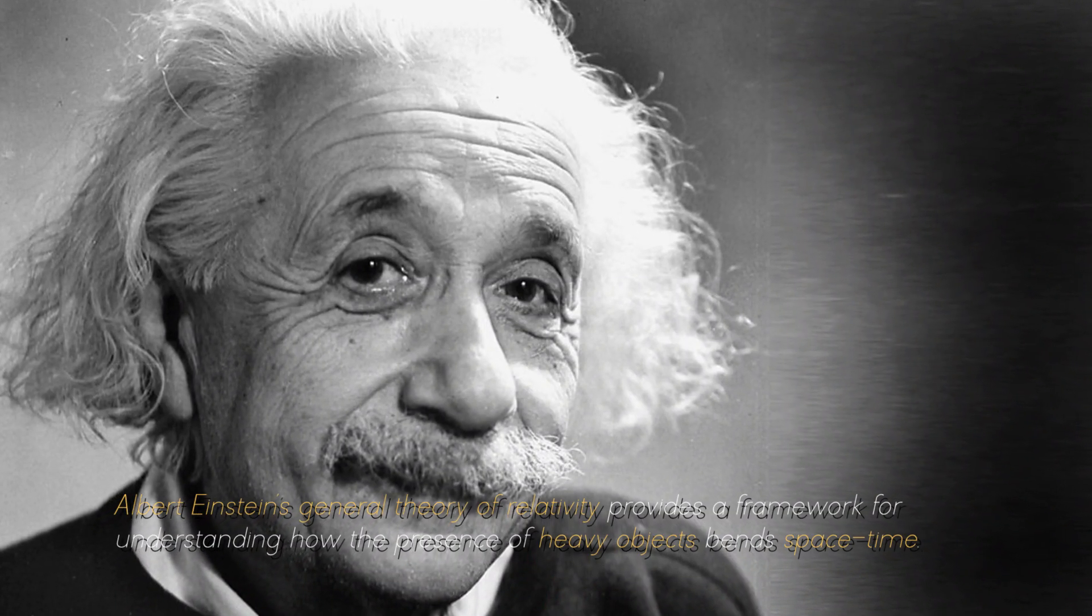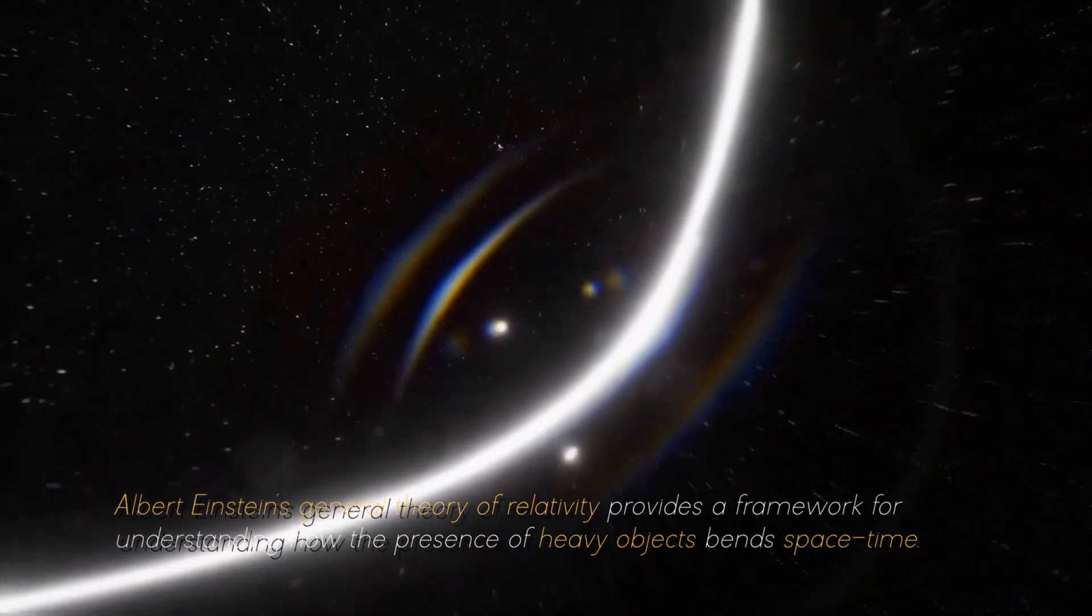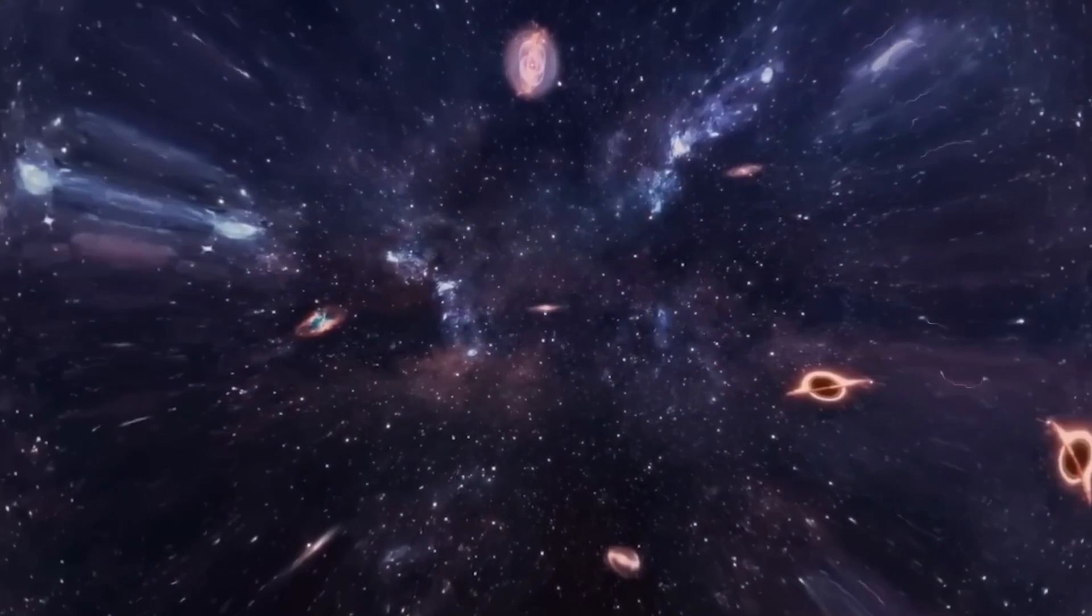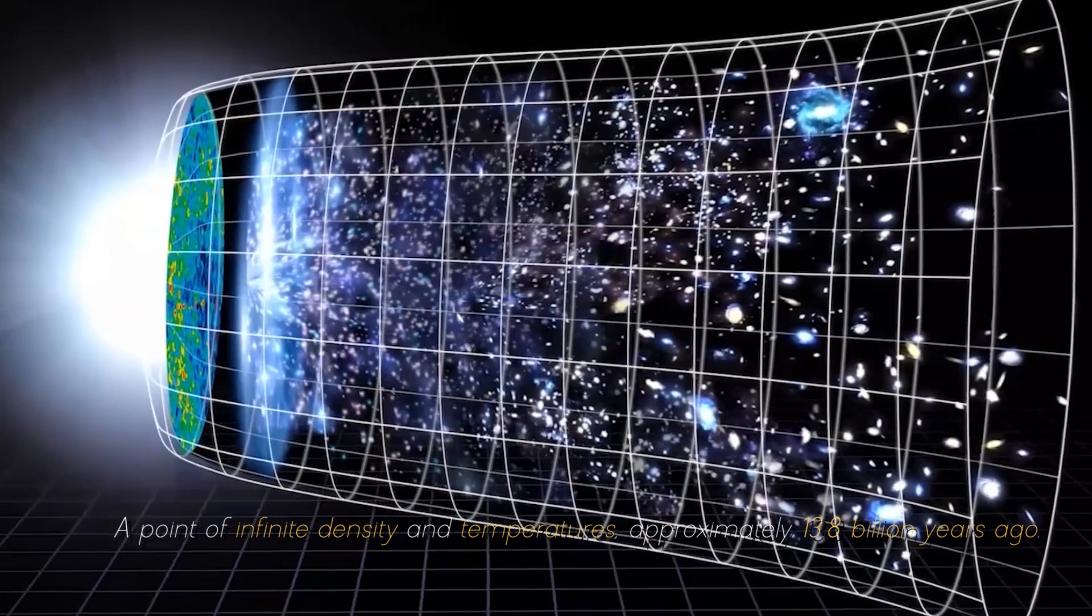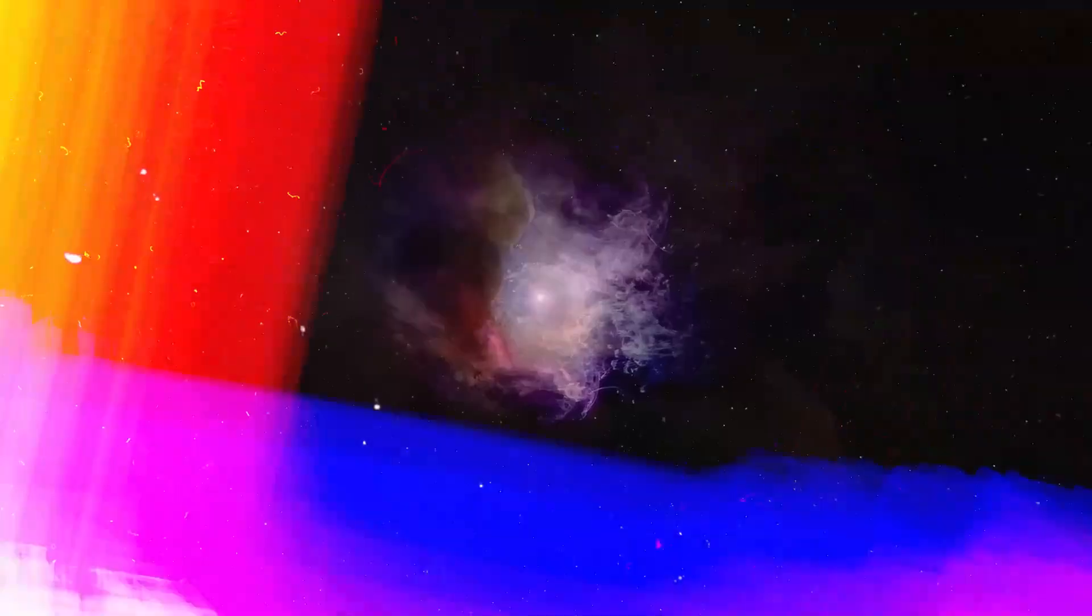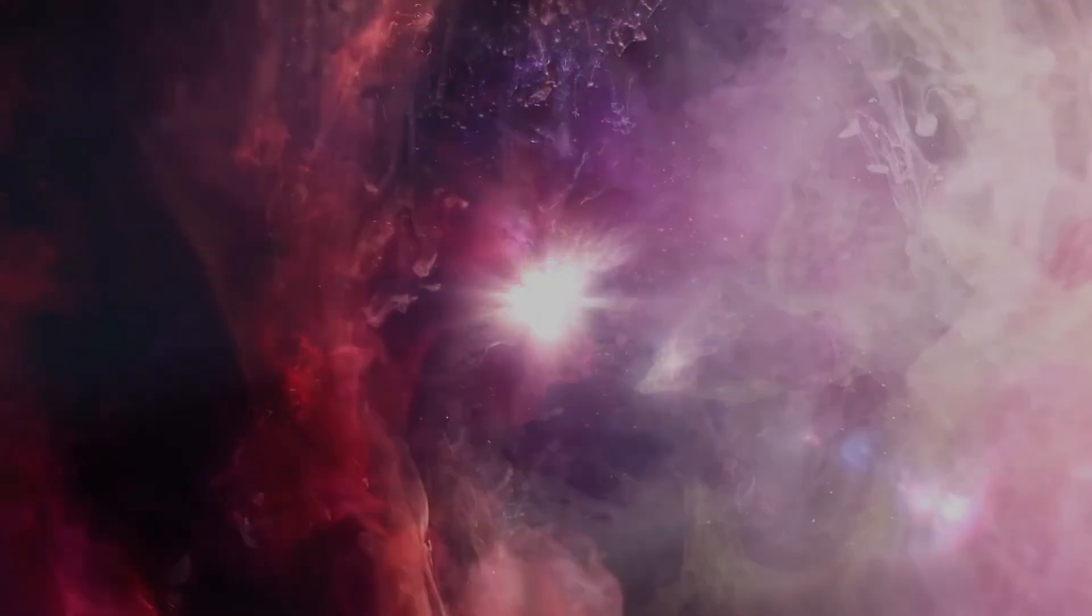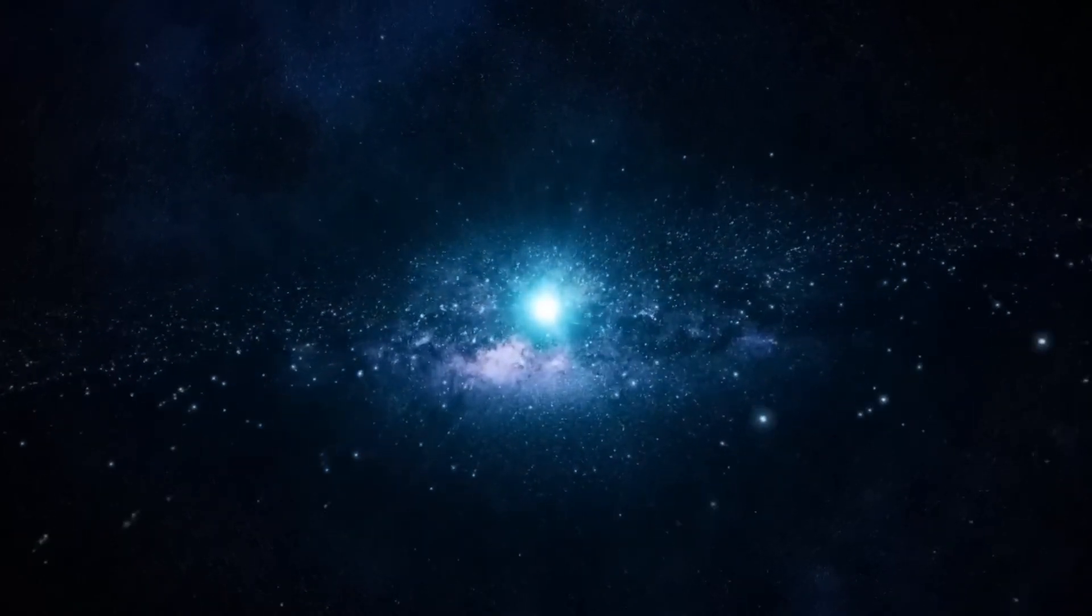Albert Einstein's general theory of relativity provides a framework for understanding how the presence of heavy objects bent space-time. According to this theory, the cosmos originated as a singularity, a point of infinite density and temperature approximately 13.8 billion years ago. According to the Big Bang theory, all matter and energy were compressed into an extremely small, hot region. At this point, the cosmos began to expand with a rapid and violent event known as the Big Bang.